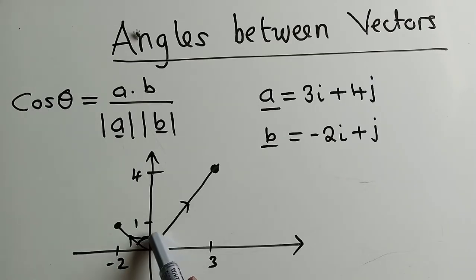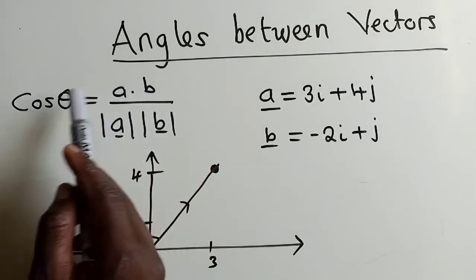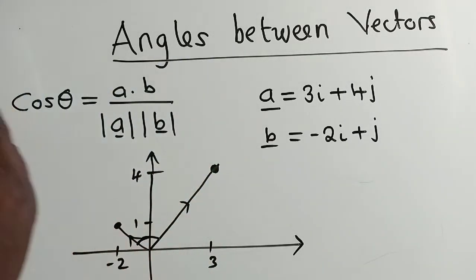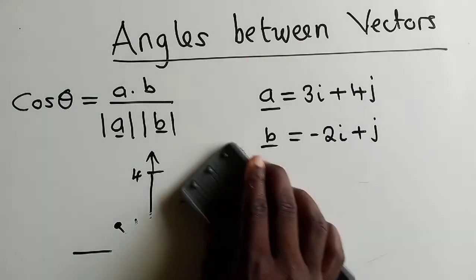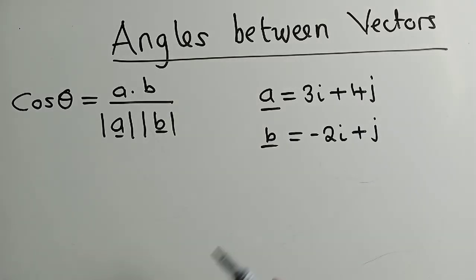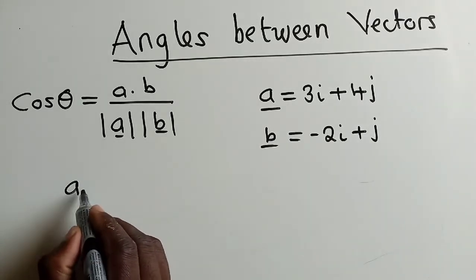To find the angle in between these two vectors, we need to use the formula, which is right here. This is the formula we need to use. Let me do the calculations on how to find the dot product.